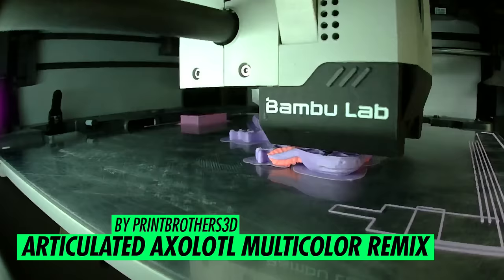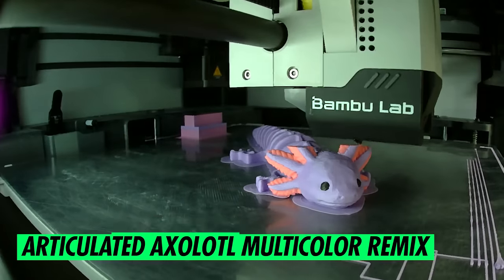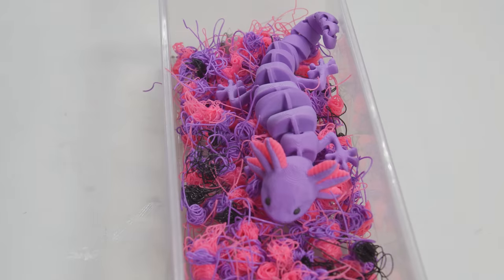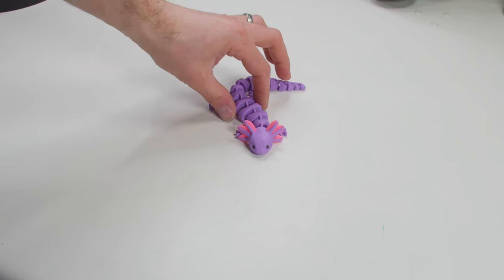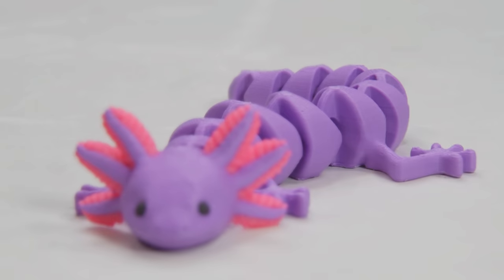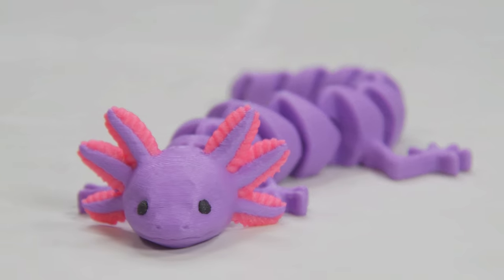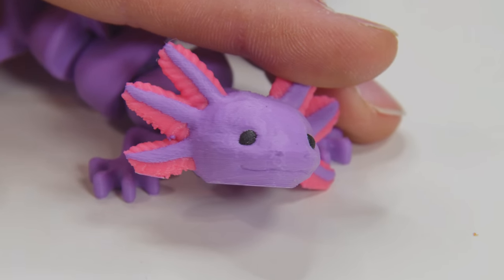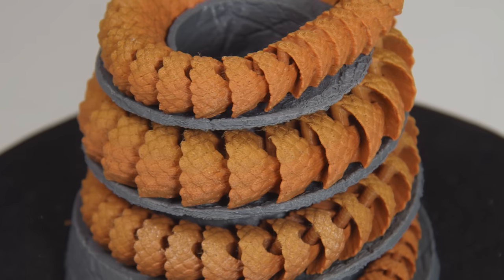The articulated axolotl multicolored remix by Print Brothers 3D is so cute! Multi-material printing creates a lot of waste, but you know what? I have zero respect for Al Gore's stupid planet, so I scaled this bad boy up 75%, and like 13 hours later I was nuzzling him and naming him Zaxolotl. Look at his little eyes, his little dimples!